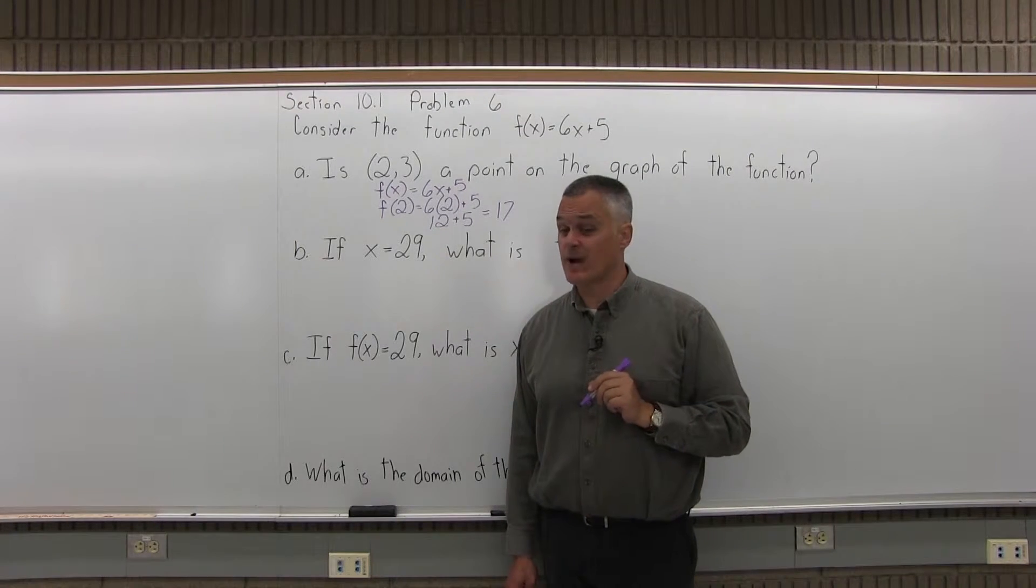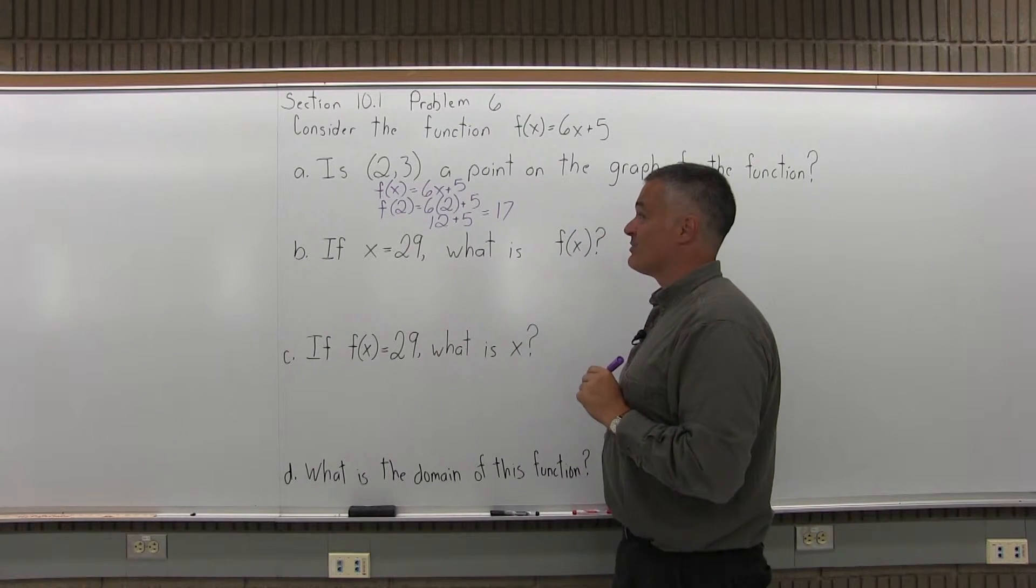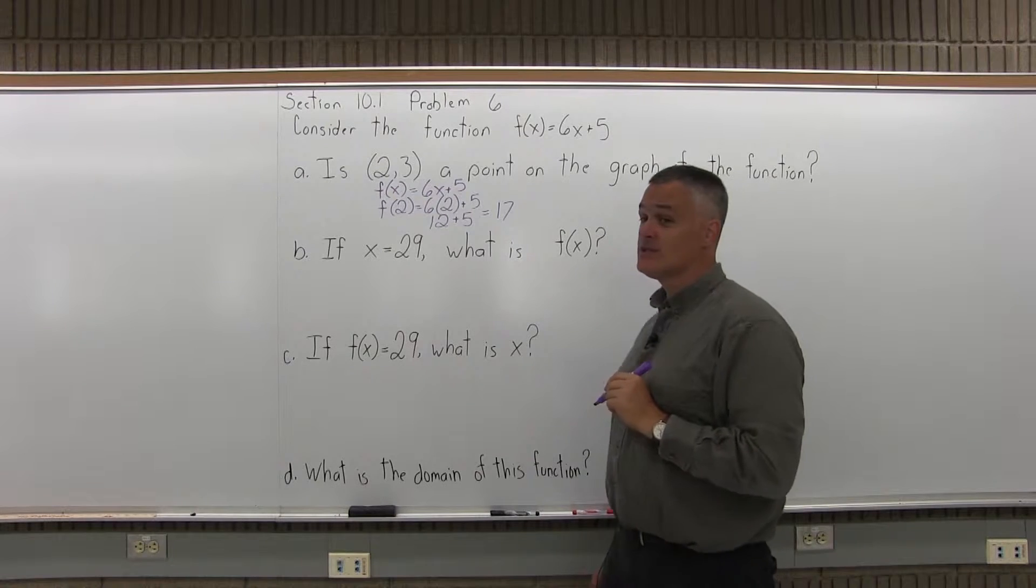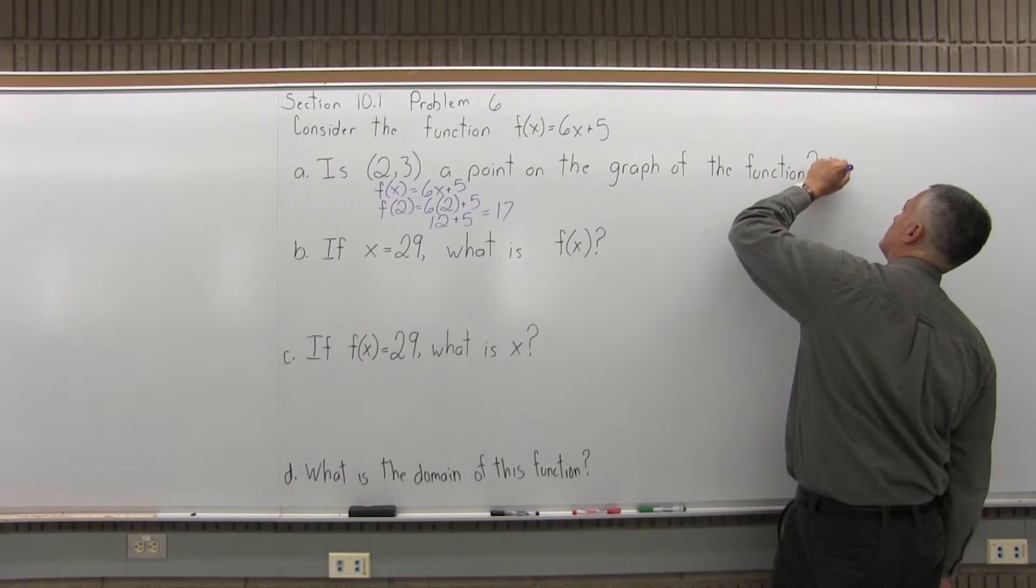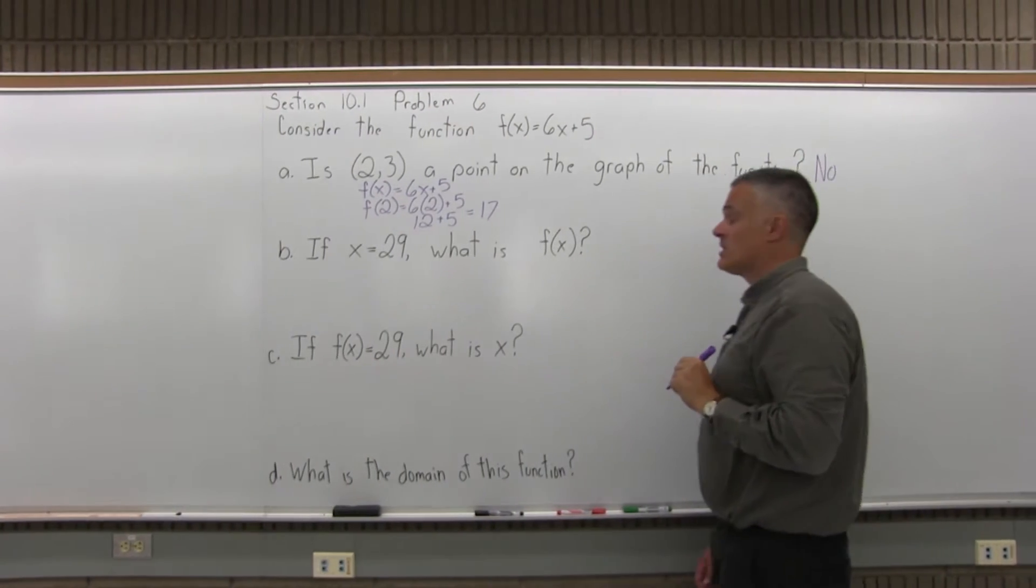The point 2 comma 17 is a point on the graph, but part A asks, is the point 2 comma 3 a point on the graph? And the answer is no, because if you put in a 2, you do not get out a 3. So the answer to part A is no, 2 comma 3 is not a point on the graph.